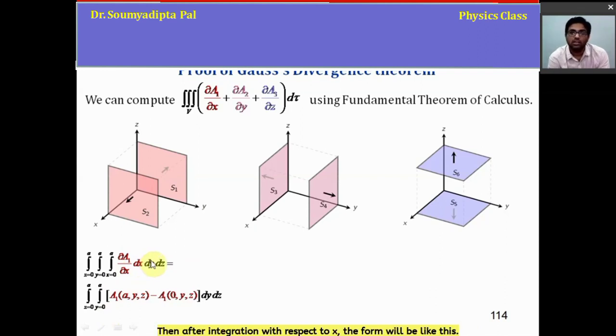Then after integration with respect to X, the form will be like this. This is the value of A1 at X equal to A and this is the value of A1 at X equal to 0, keeping Y and Z as variable. Similarly,